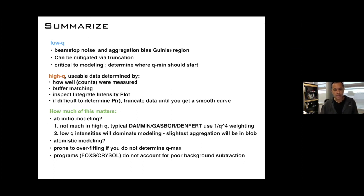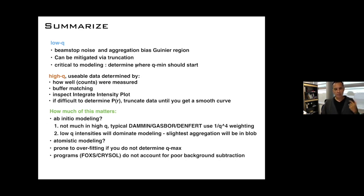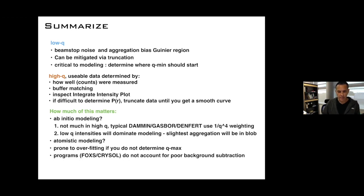To summarize: low-q issues include beam stop noise and aggregation, which bias the Guinier region. This can be mitigated by truncation, but it still causes a bias. This is critical for modeling — programs like DAMMIF, GASBOR, and DAMFILT really bias the low-q intensities because they do 1/q^4 weighting. Even a slight amount of aggregation can cause slight elongation of the model.